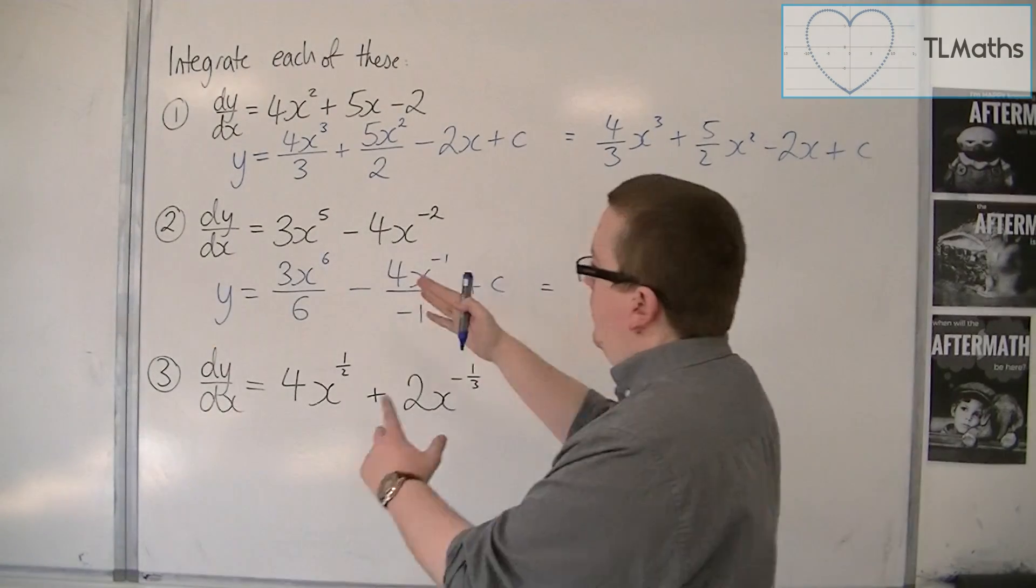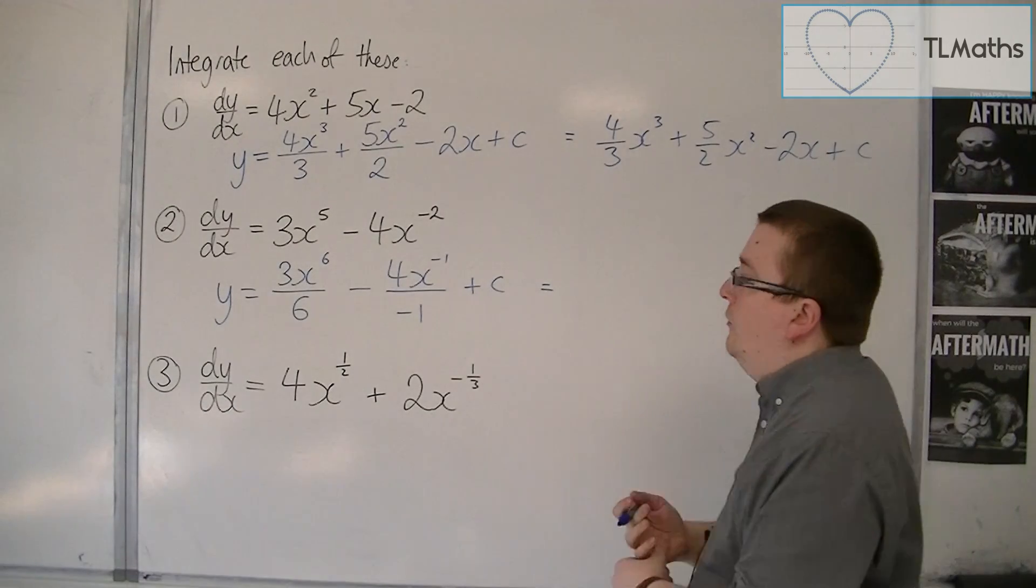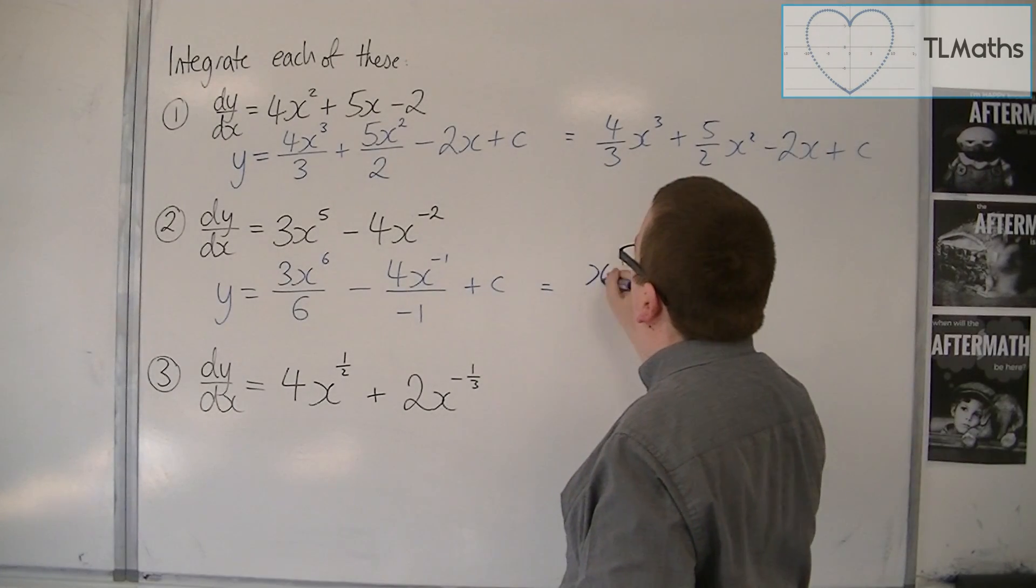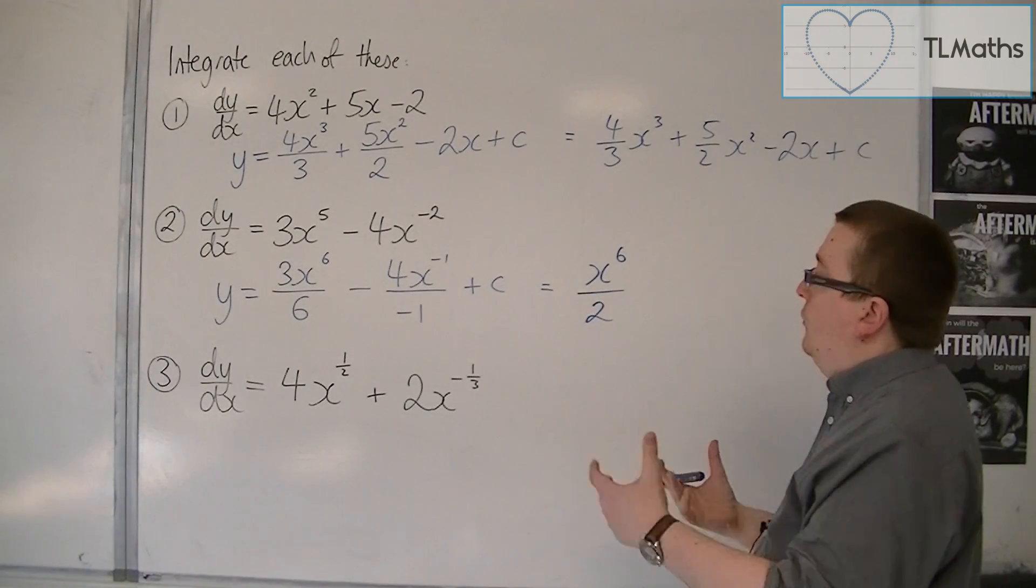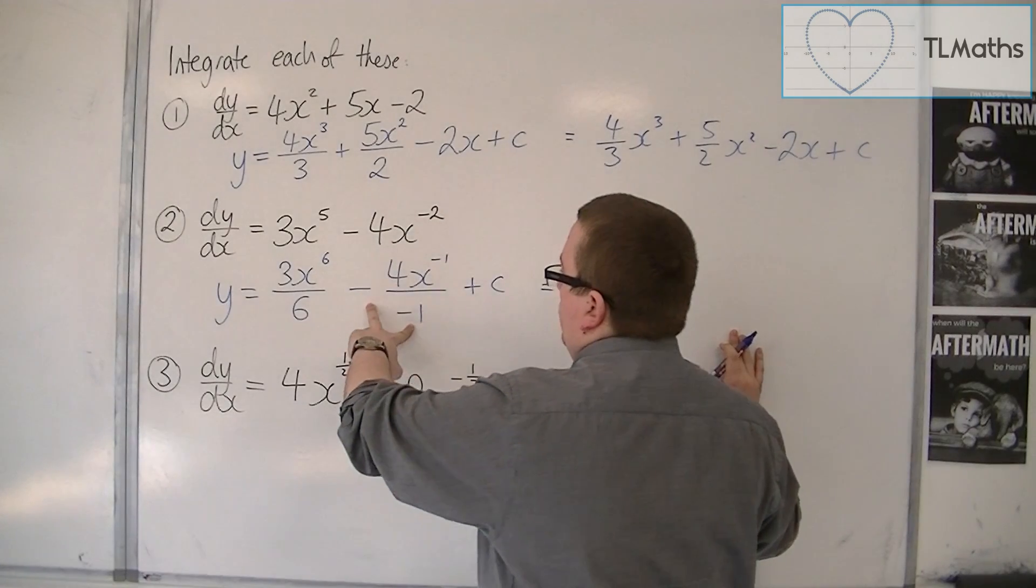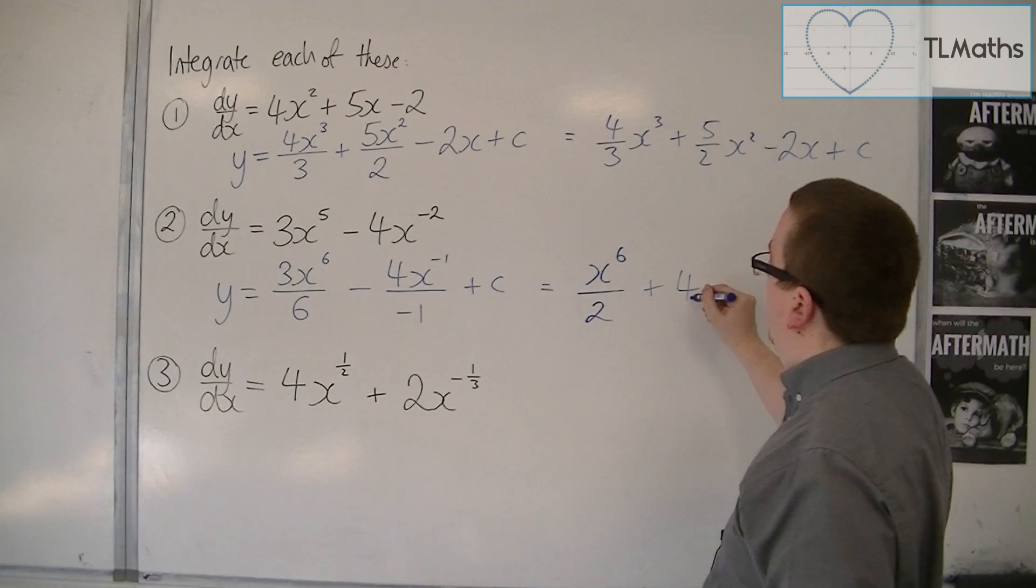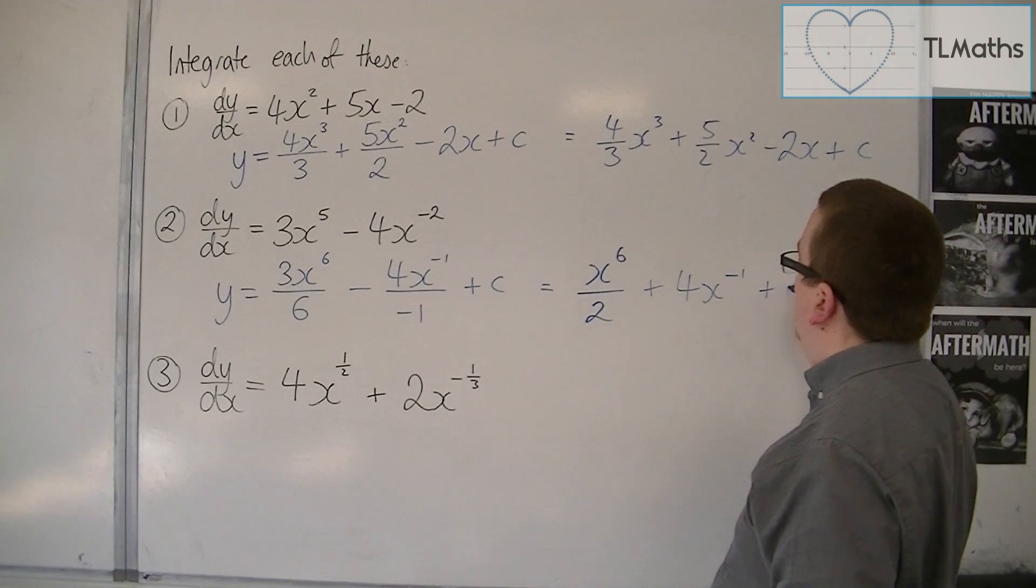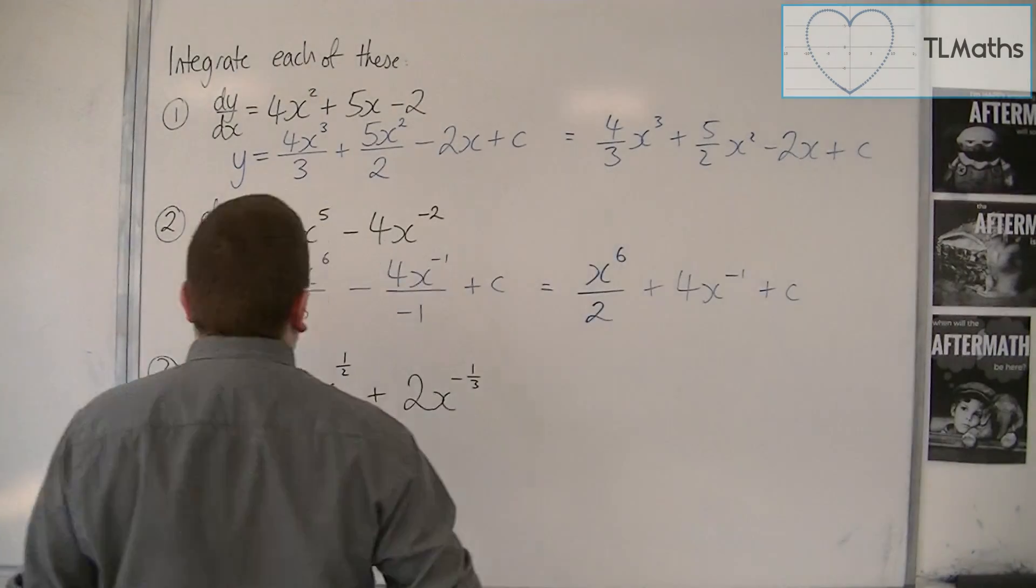Now, obviously, we can simplify this because 3 sixths is the same as 1 half. So you can write that as x to the 6 over 2 or 1 half x to the 6. Then we've got these two minus signs, so we're going to have plus, and 4 over 1 is just 4. So plus 4x to the minus 1, and we have that plus c on the end. So that has simplified it.